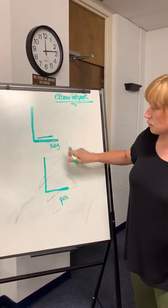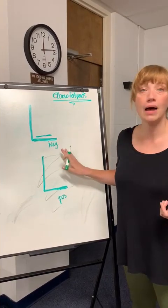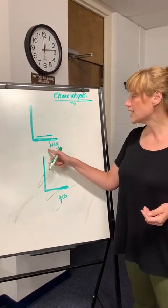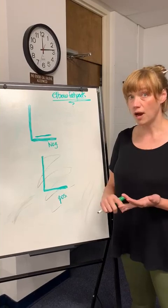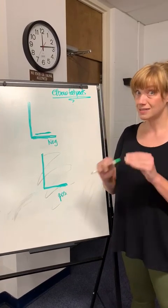This is the humerus. This is the forearm. When we're talking about a negative lateral elbow, what we're saying is that it's negative for any fractures or breaks. It's negative.